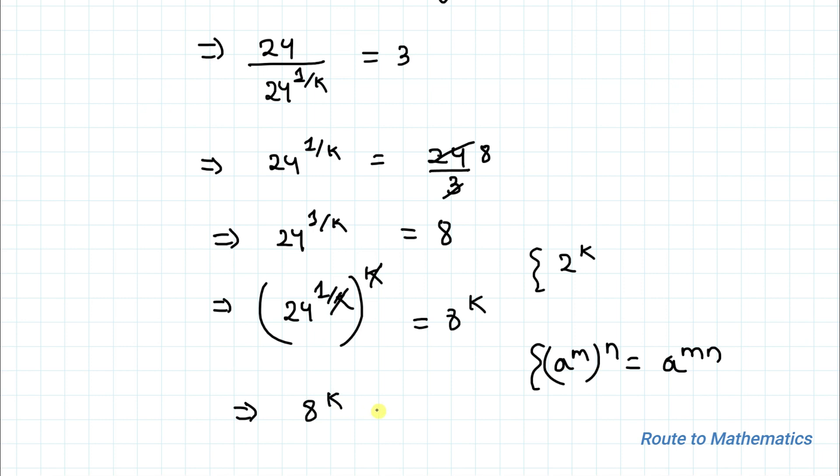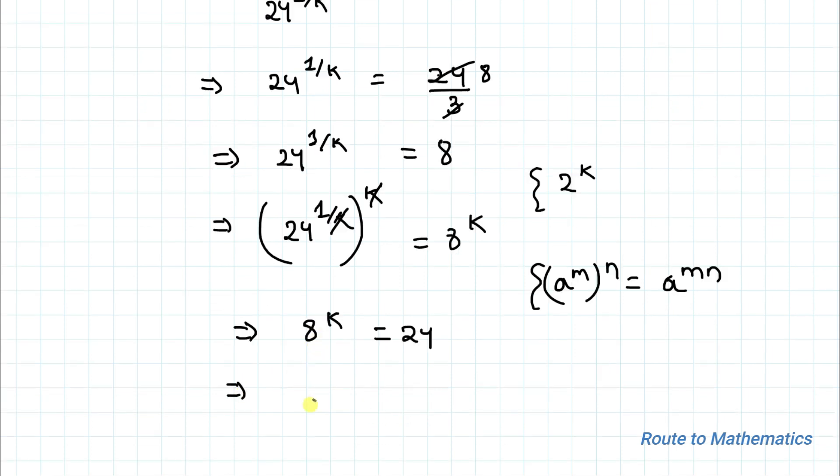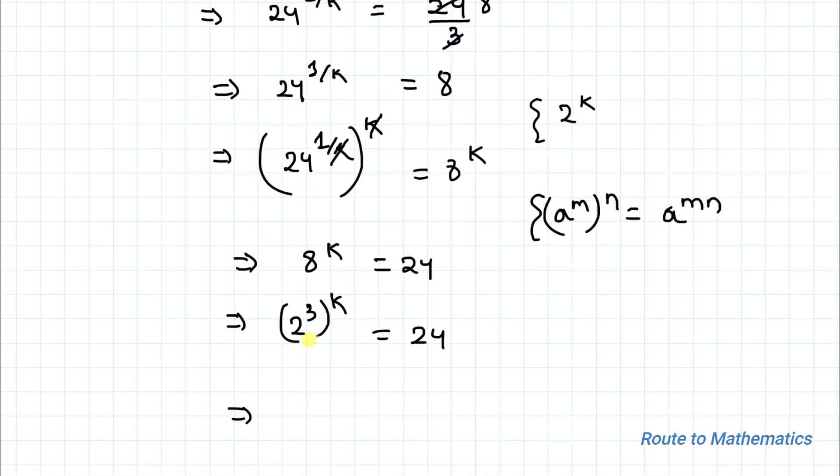Now we know that 8 is nothing but 2 cube, so we can write 2 cube whole to the power k equals to 24. This implies we can write this term as 2 to the power k whole to the power 3, which equals to 24.